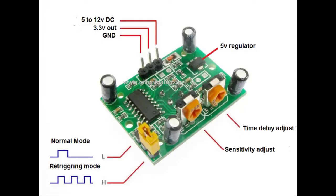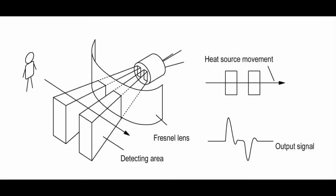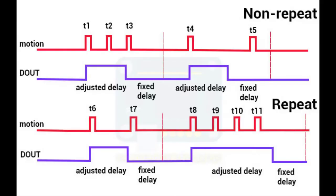The second mode is re-triggering mode. When the PIR sensor detects motion, it sets the output high until the adjusted time, but if it detects motion during the output high state, it again triggers the sensor to extend the output high period. T6 is the first motion detected. T7 does not trigger the sensor because it is within the fixed delay interval. T9, T10, and T11, which occur after T8 triggers the sensor, extend the time delay since they occur within the adjusted delay interval.